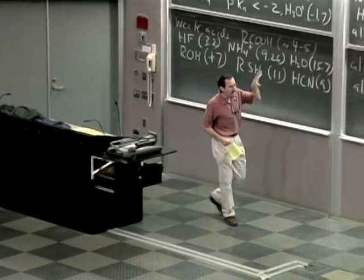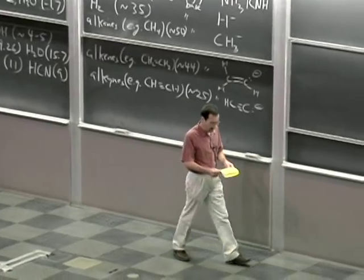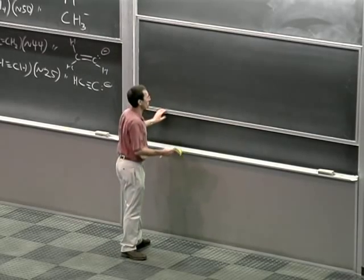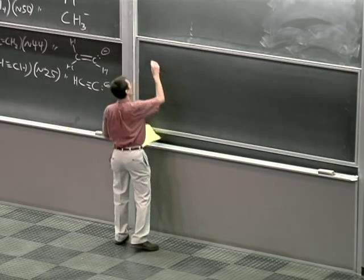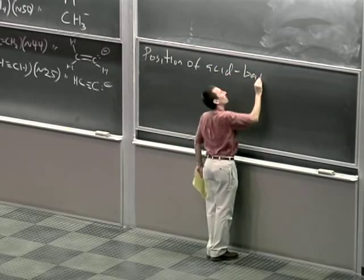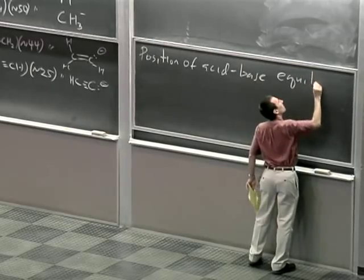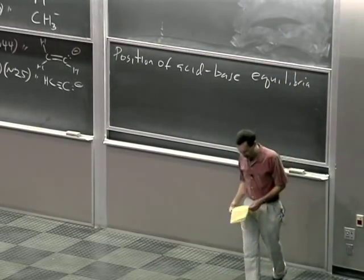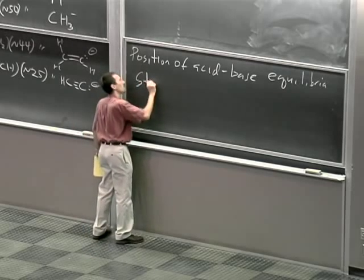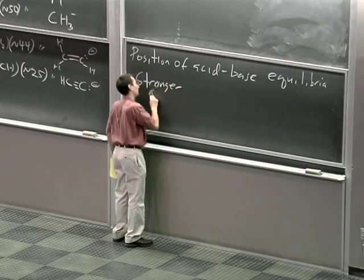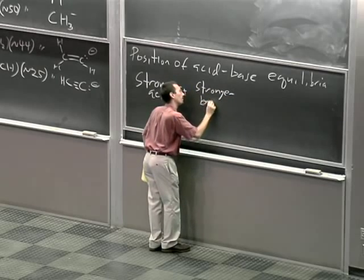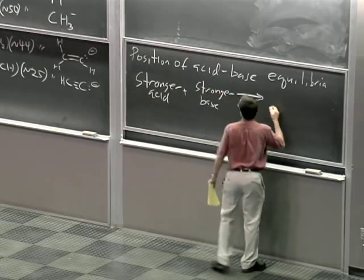Now I want to take these numbers for the rest of the lecture and play with them in terms of some ideas about the position of acid-base equilibria, and also some trends that contribute to acid strength. The position of acid-base equilibria — very simple: a stronger acid and a stronger base react to give a weaker acid and a weaker base.